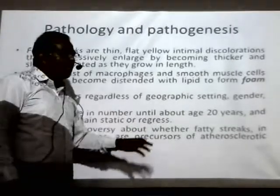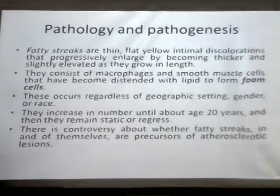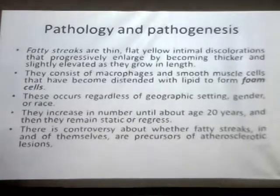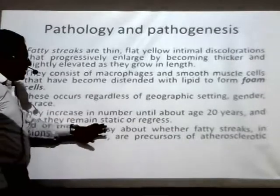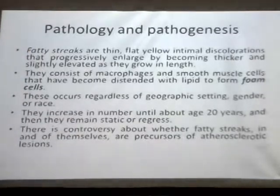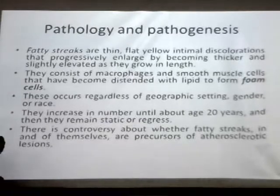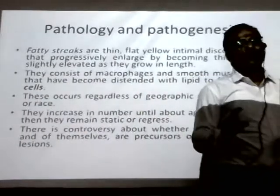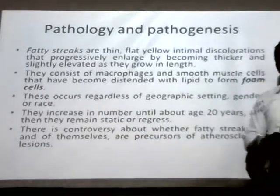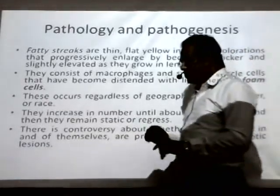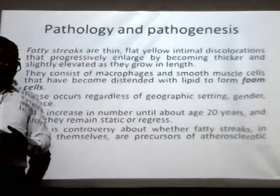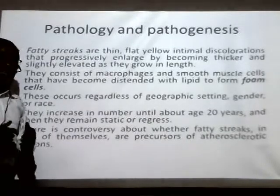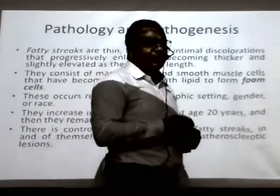Usually these foam cells will increase until the age of 20 years, and then they remain static or regress — from 20 years to the start of the fourth decade, they will either remain static or decrease. There is a controversy about whether fatty streaks in and of themselves are the precursor of atherosclerotic lesion. One hypothesis says atherosclerosis develops from fatty streaks; the other hypothesis believes there is some injury to the endothelial layer, and that injury leads to the development of atheroma.